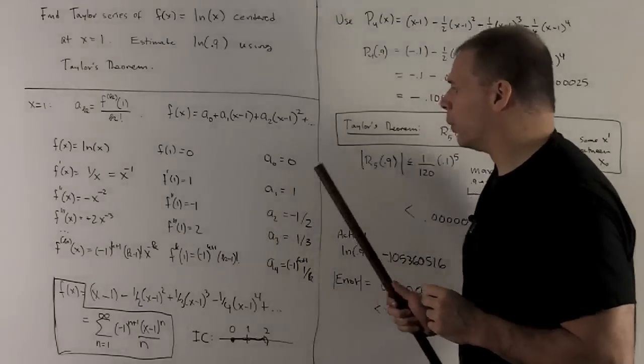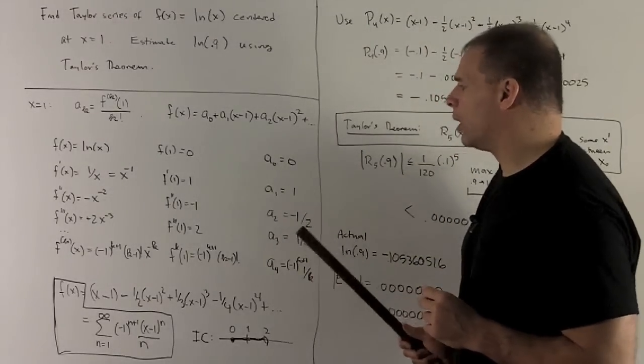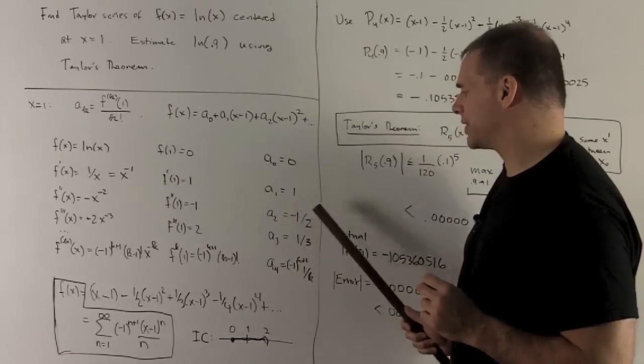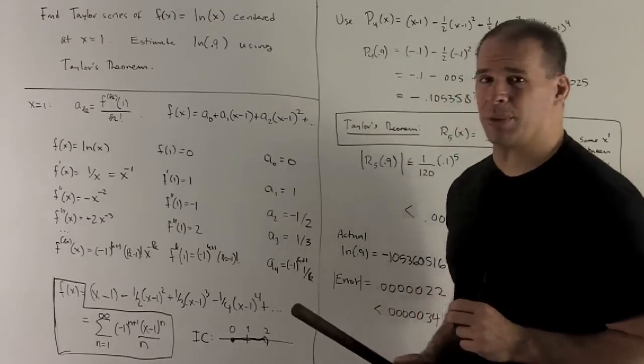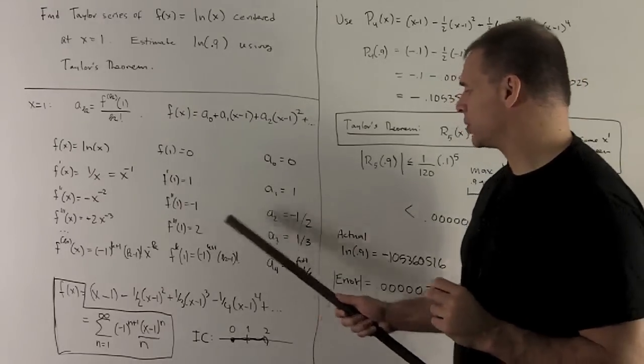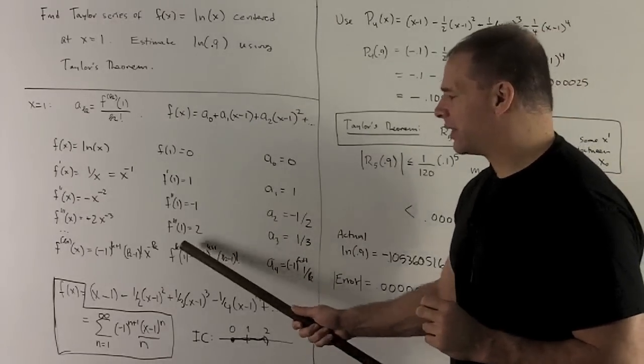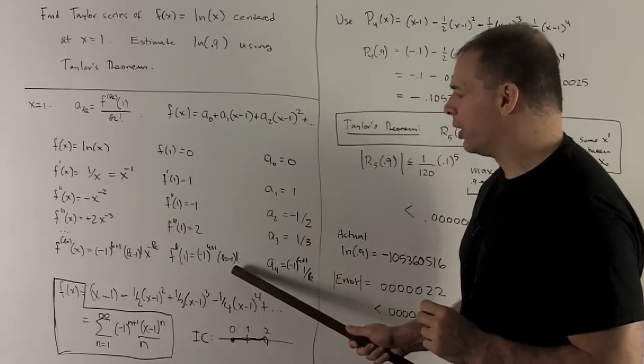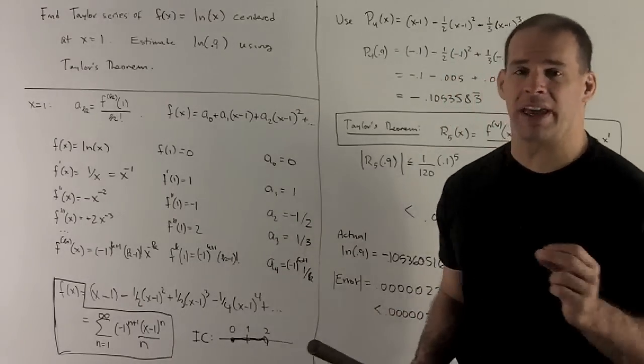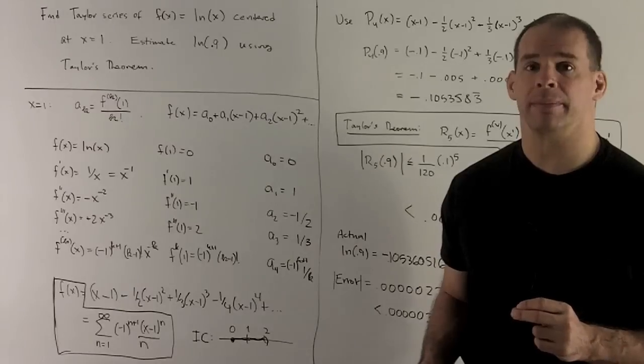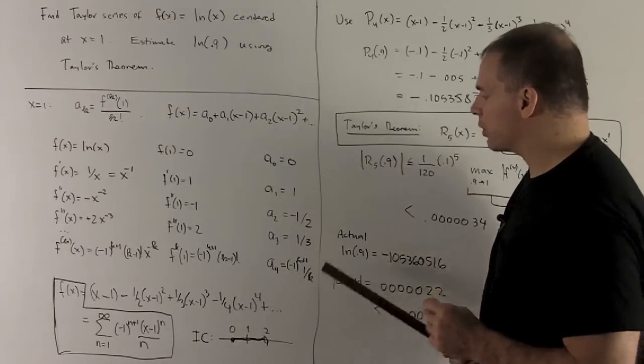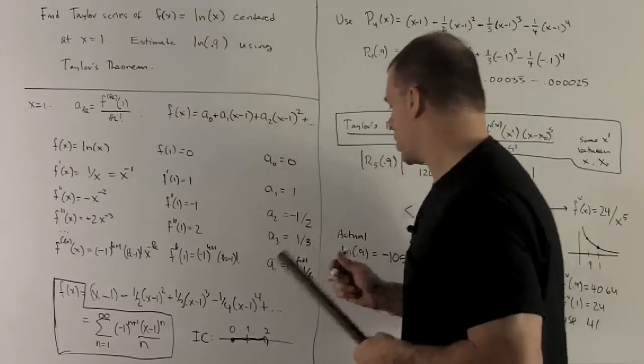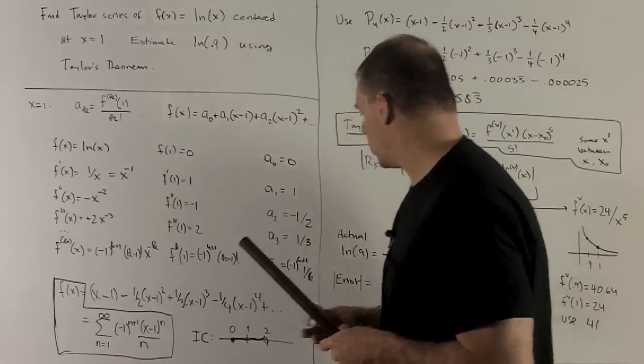So now we divide each by its factorial. 0 factorial is equal to 1, 1 factorial is equal to 1, 2 factorial is equal to 2 times 1 is 2, so I get minus a half. 3 factorial is equal to 3 times 2 times 1, which is 6, so we get a third. And then when I get down to the kth term, we're going to take this, divide by k factorial, but k minus 1 factorial over k factorial is just equal to 1 over k. So our general term is going to be minus 1 to the k plus 1 times 1 over k.